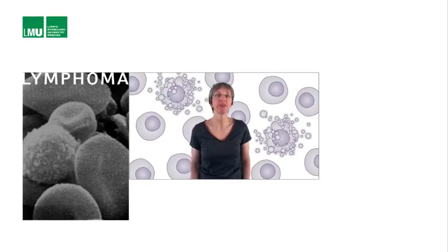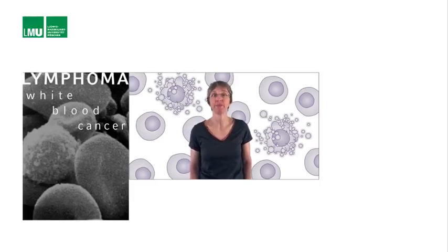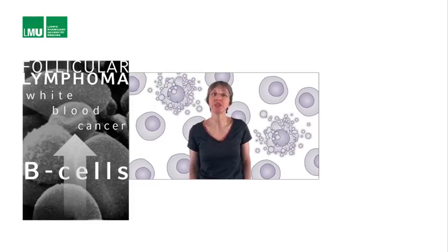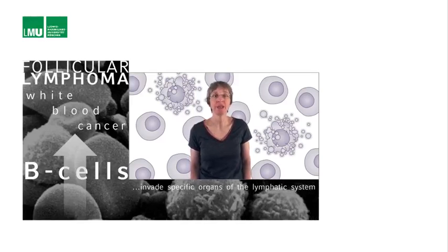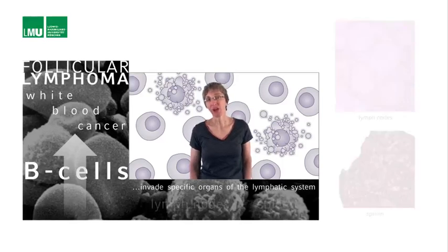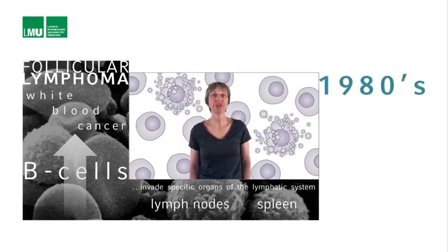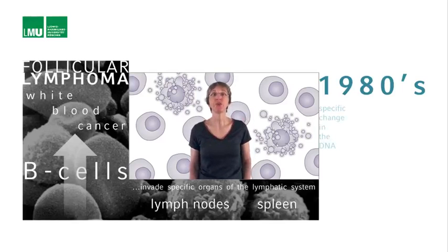Lymphoma is a type of cancer referred to as blood cancer. It affects cells of the blood, and white blood cells in particular. White blood cells are cells of the immune system such as B cells and T cells. In patients with lymphomas, the numbers of B cells or T cells in the blood and lymphatic system are dramatically increased. Follicular lymphoma is a specific type of lymphoma that affects B cells, which then invade organs of the lymphatic system such as lymph nodes or the spleen. By the mid-1980s, a number of investigators had succeeded in identifying a specific change in the DNA isolated from follicular lymphomas.